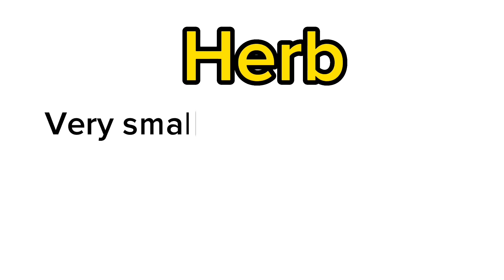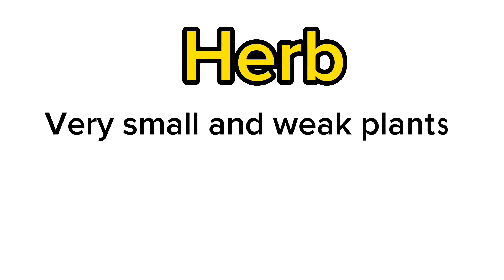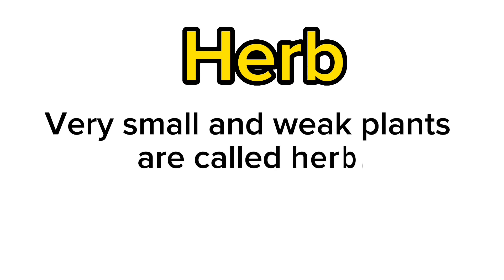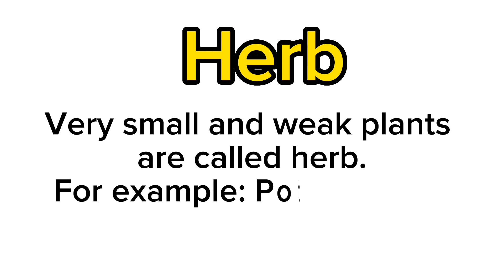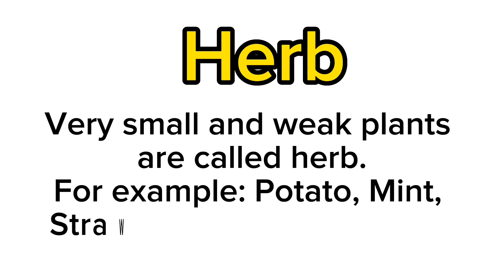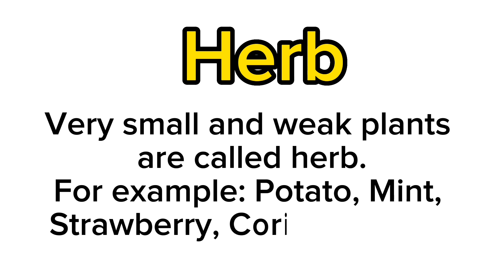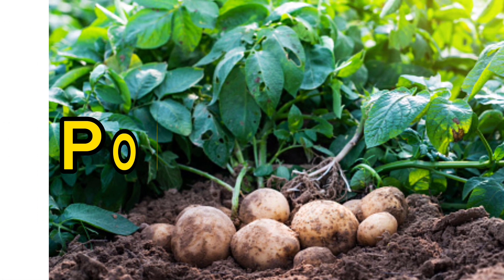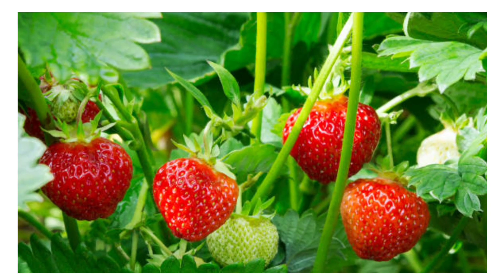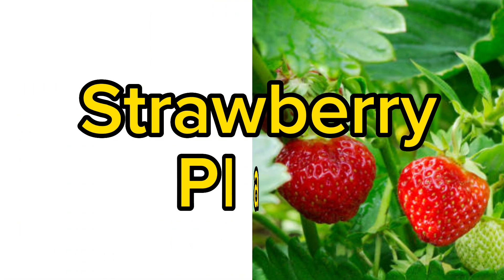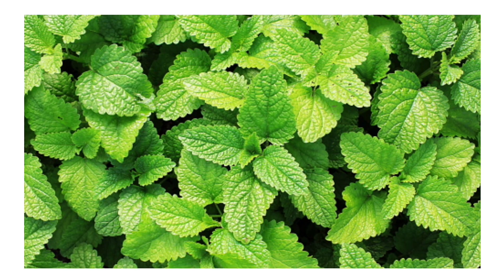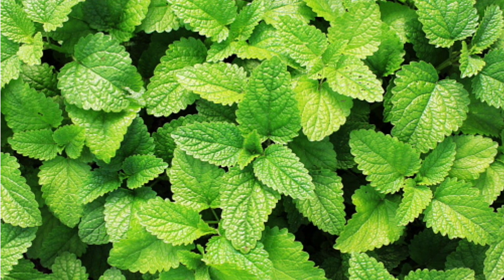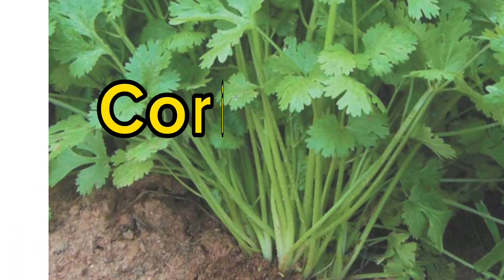Herb. Very small and weak plants are called herb. For example, potato, mint, strawberry, coriander, etc. Potato plant. Strawberry plant. Mint plant. Coriander plant.